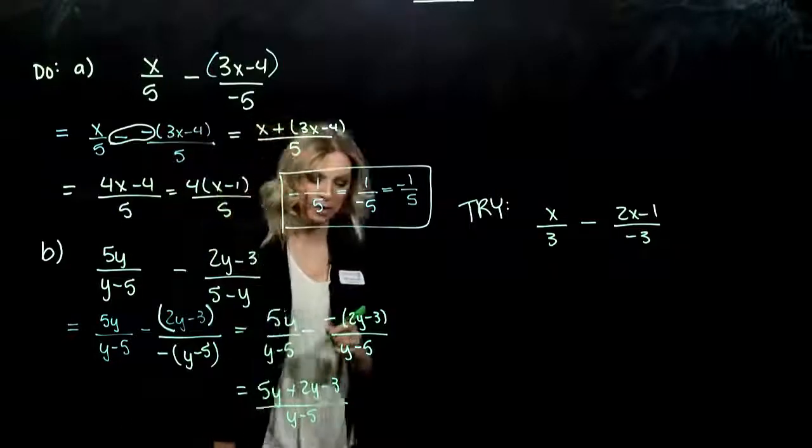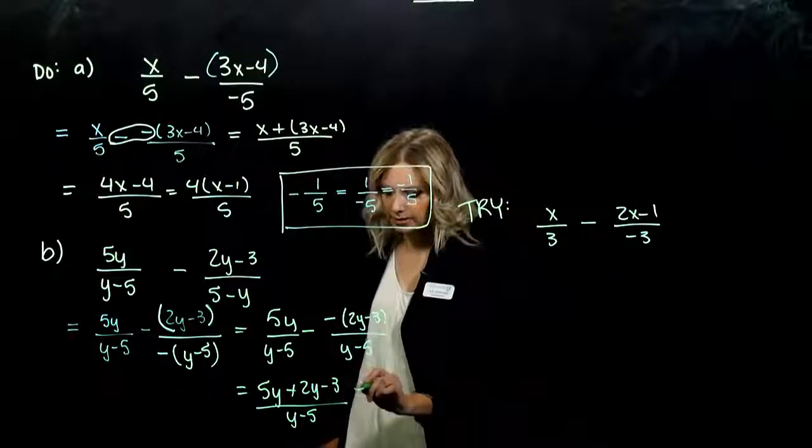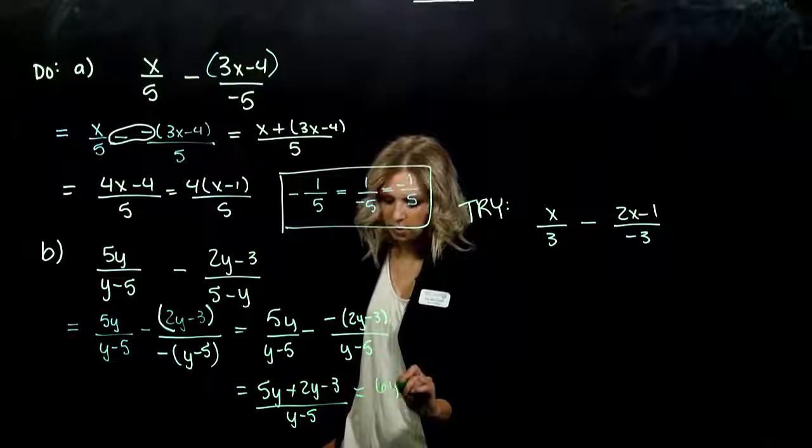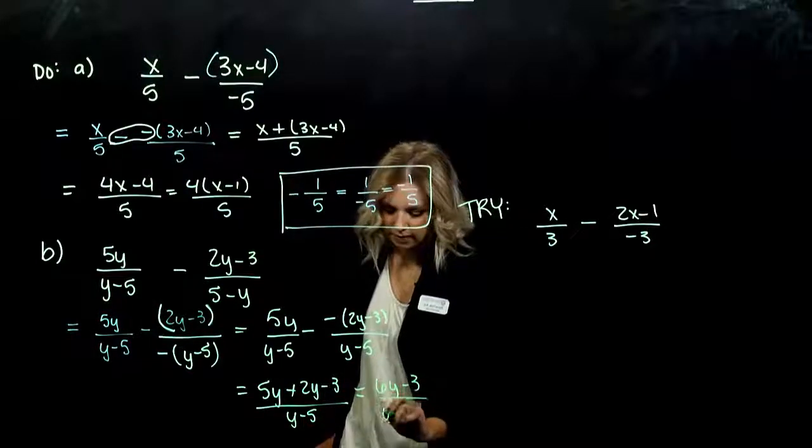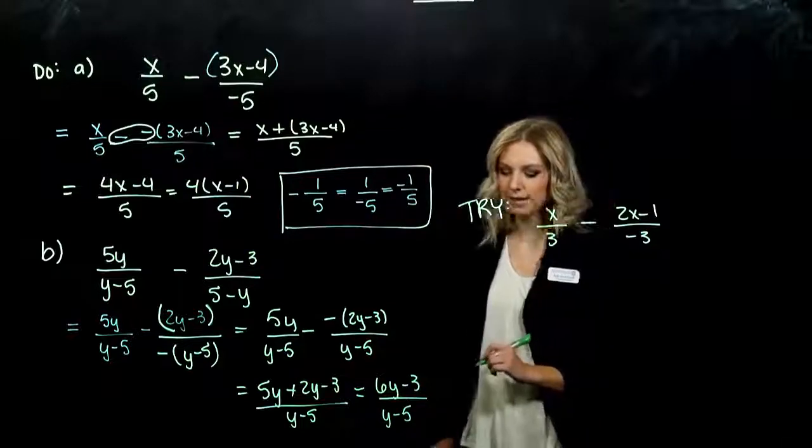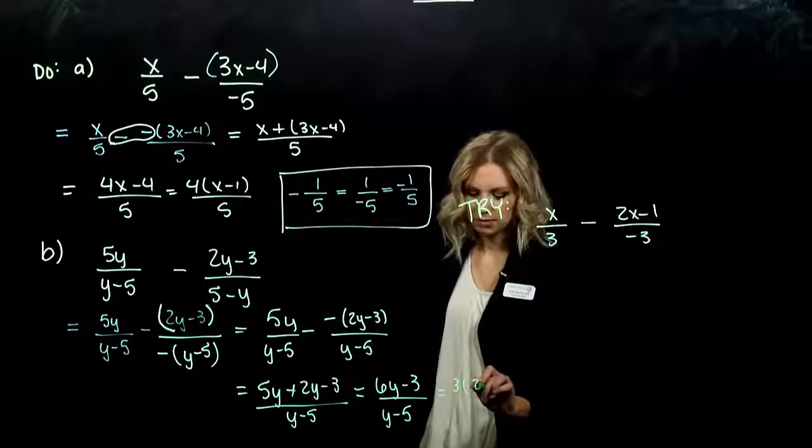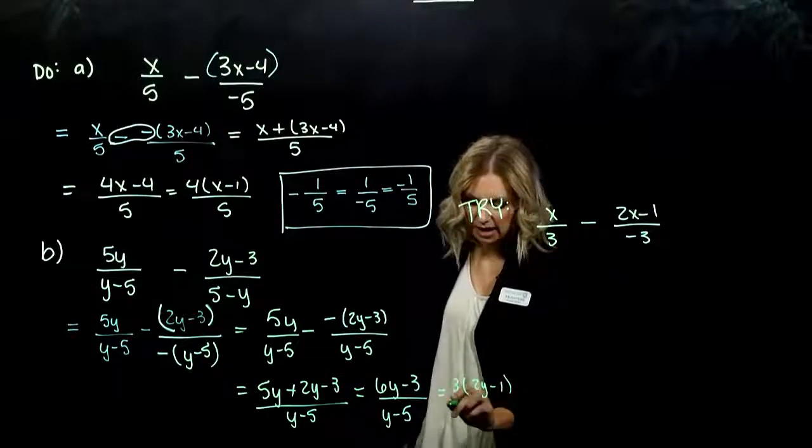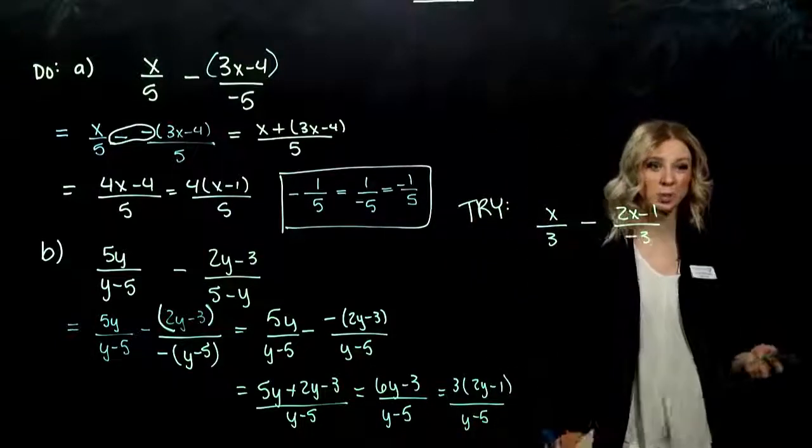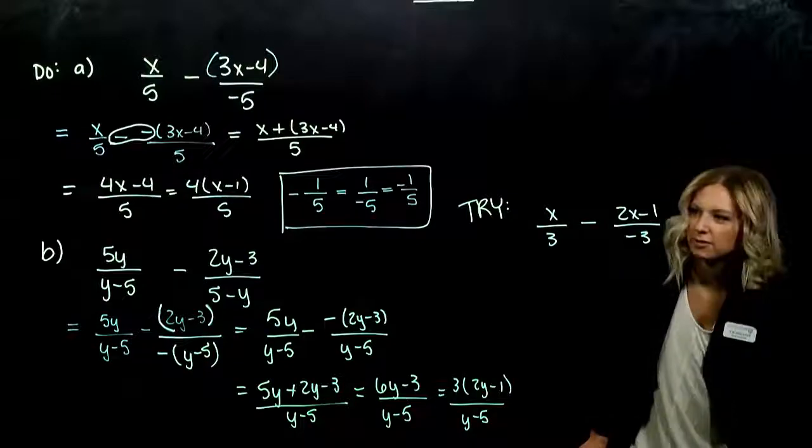I'm looking at 5y plus 2y minus 3, all over y minus 5. When we have a positive, those parentheses don't matter anymore. You can get rid of them. Combining our like terms, what are we looking at? I've got 7y minus 3, and y minus 5 down below. Can we take out anything common up top? But when we do that, can we cancel out anything? No, but we should always check. Factor until the end to check and make sure we haven't made any mistakes.